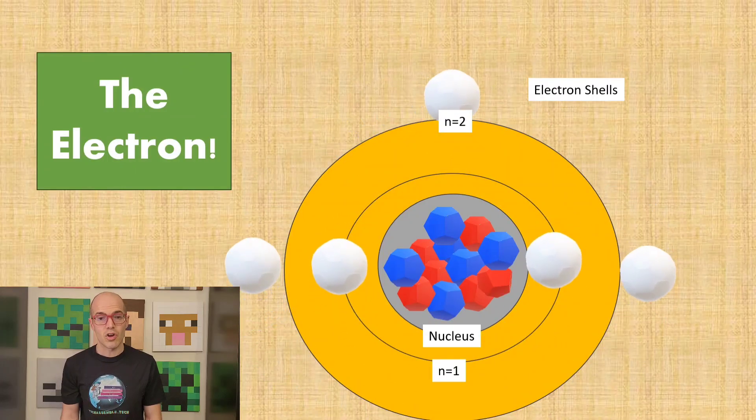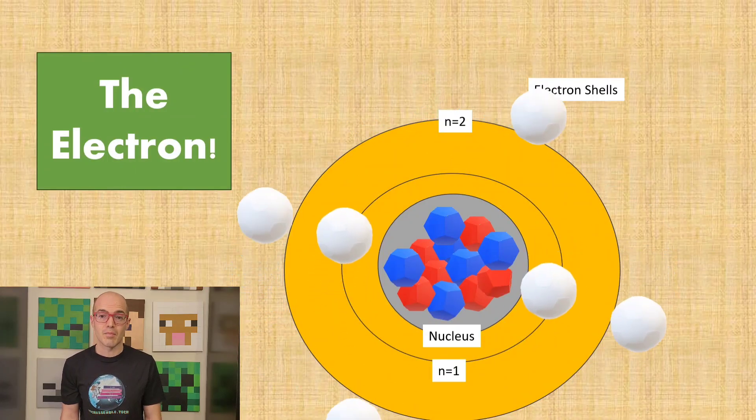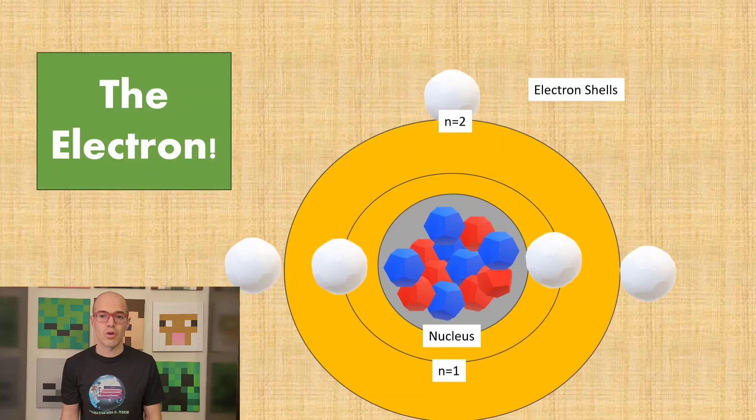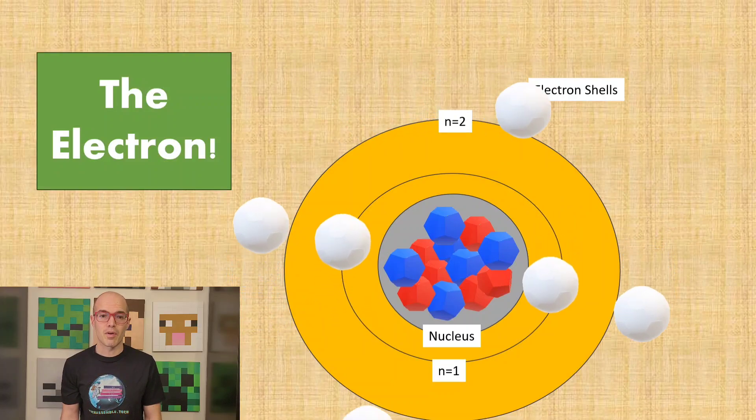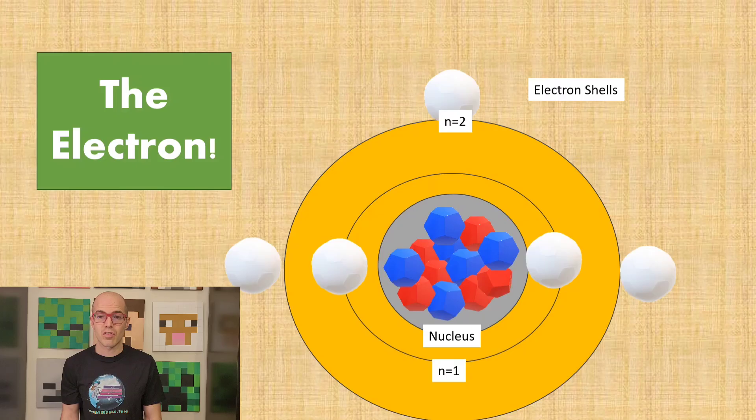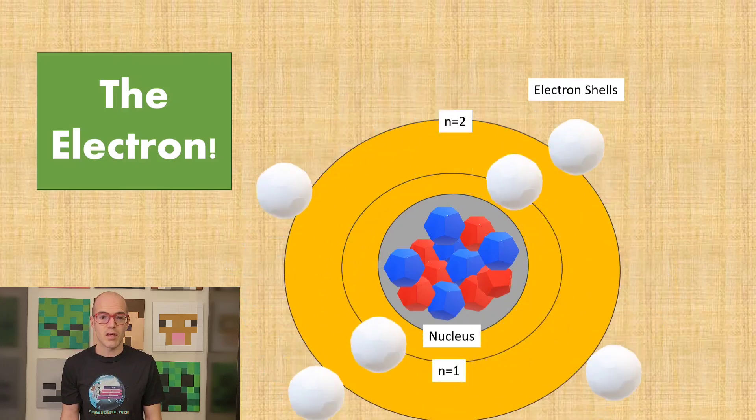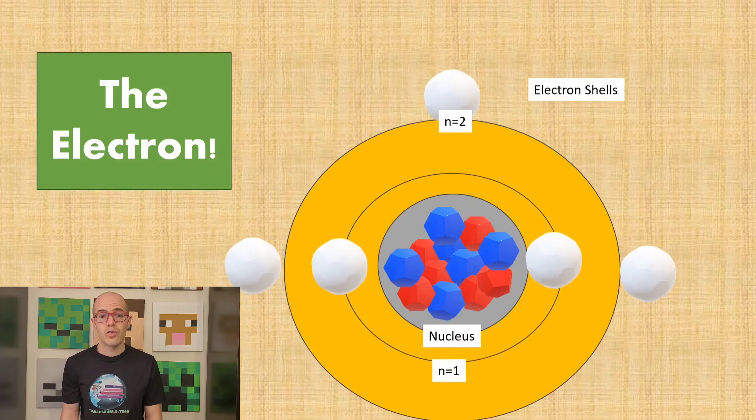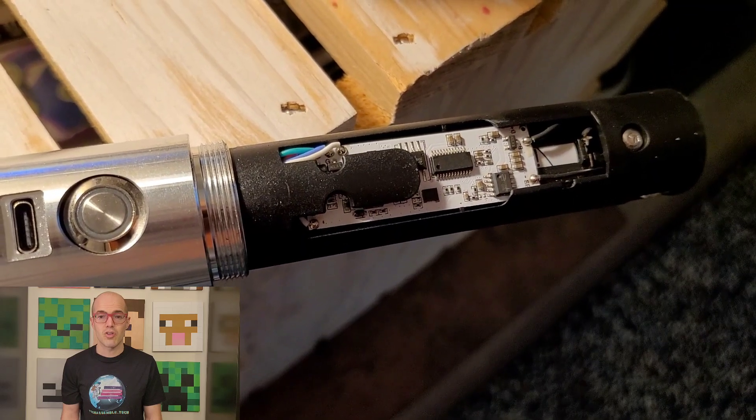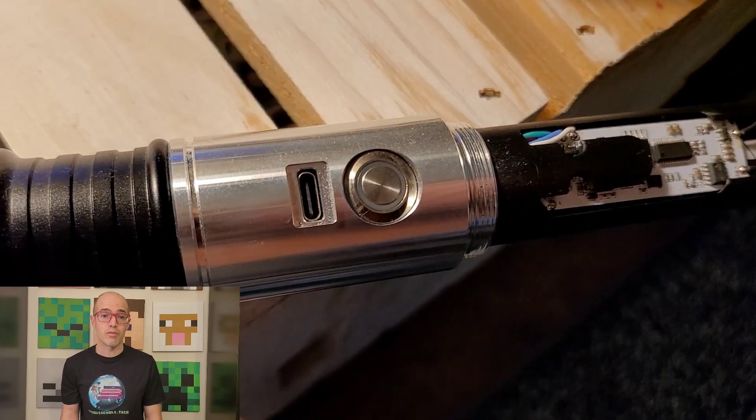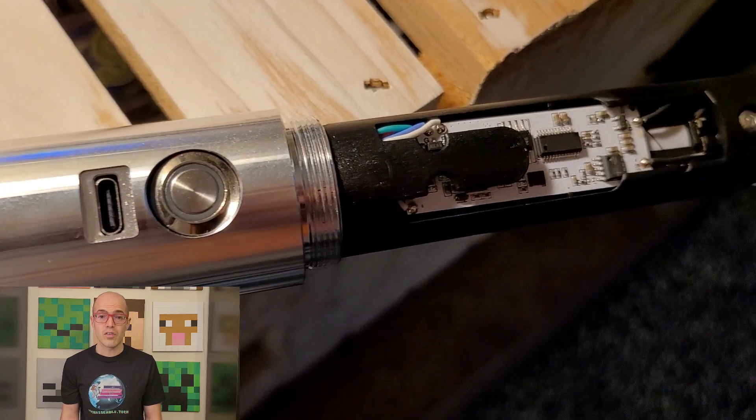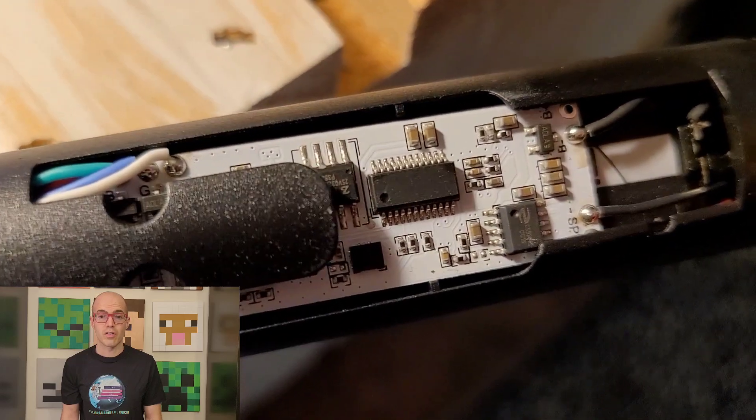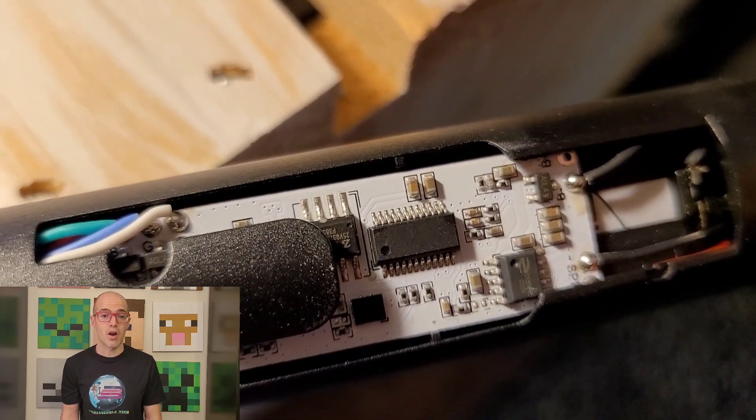Electrons, the negatively charged particles orbiting the nucleus of an atom, are like the silent performers of the atomic orchestra. Despite their tiny size, they play a crucial role in determining the chemical and electrical properties of matter. Much like planets orbiting a star, electrons whizz around the nucleus in specific energy levels or shells, each with its own unique characteristics. These elusive particles are not only responsible for the formation of chemical bonds but also for the flow of electricity in conductors. Understanding the behavior of electrons has revolutionized countless industries from electronics to material science, paving the way for innovations that power our modern world.